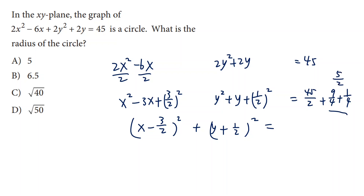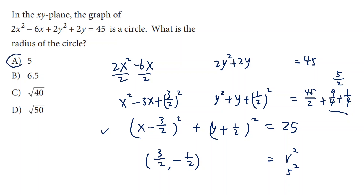So that's 5 over 2, and in total this is 50 over 2, which is 25. We can now see clearly this is a circle equation with center at (3/2, -1/2). The radius squared is 25, so the radius is 5.